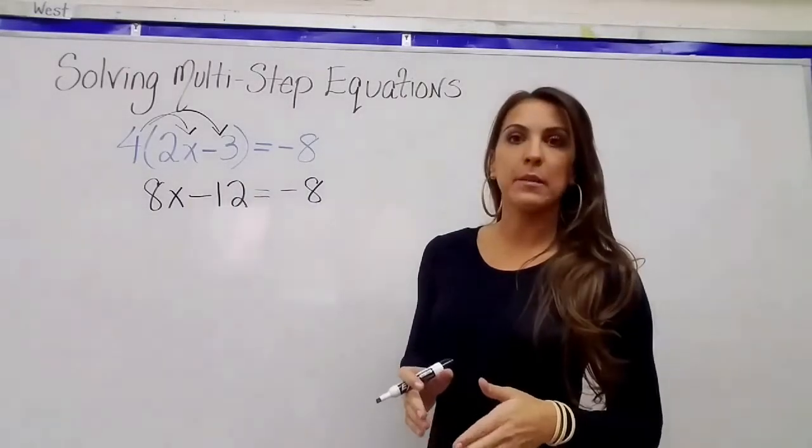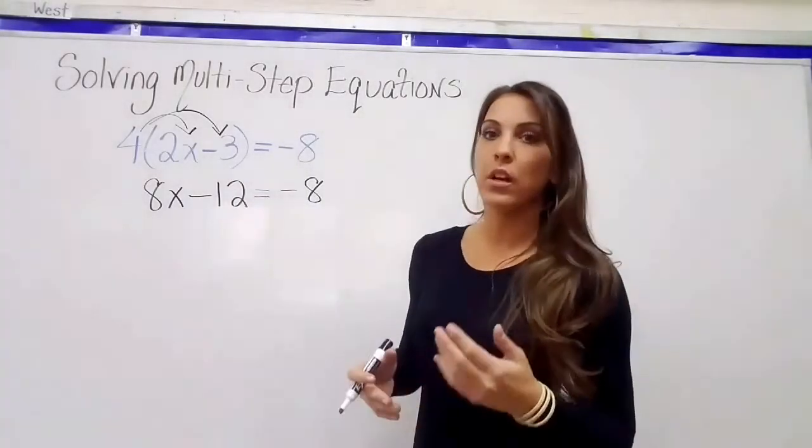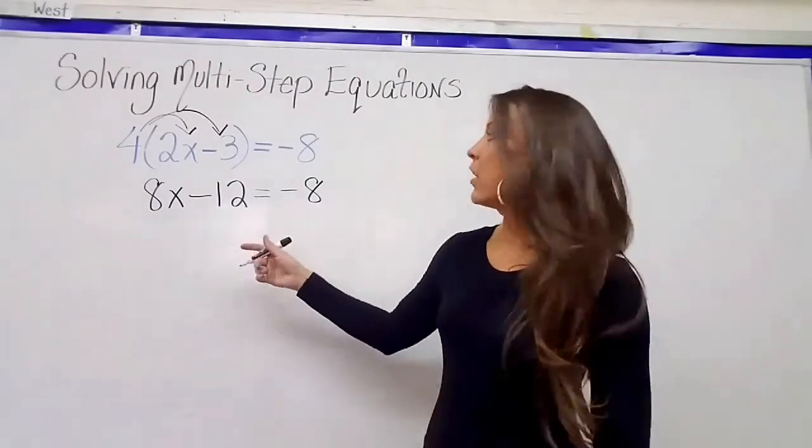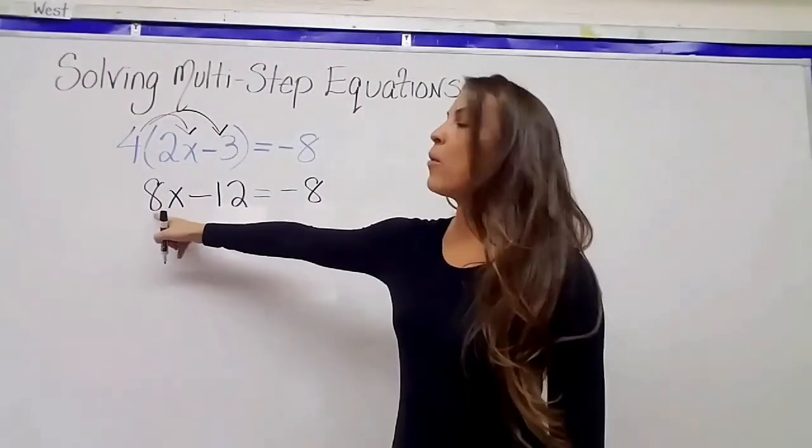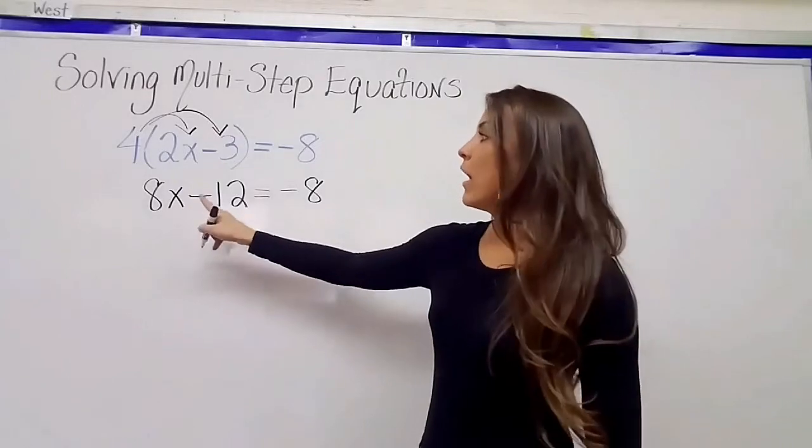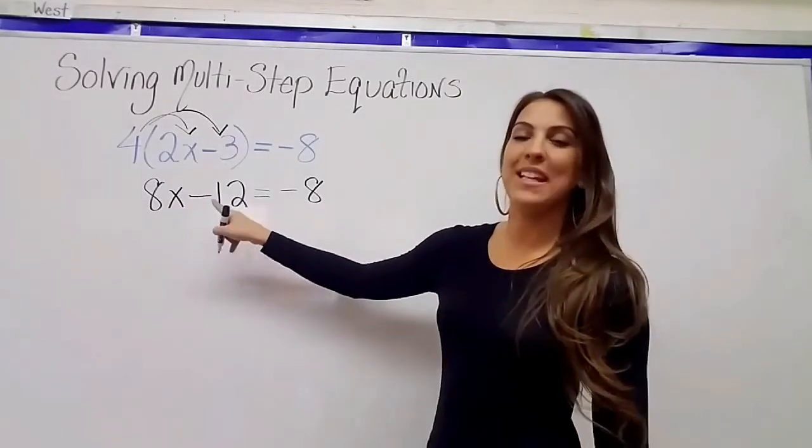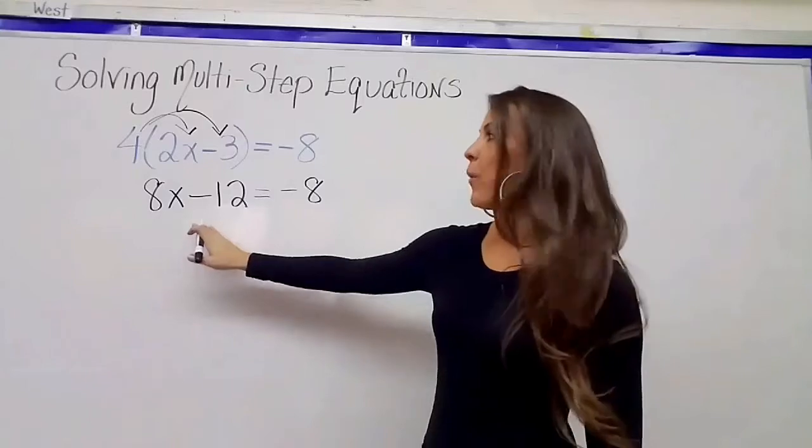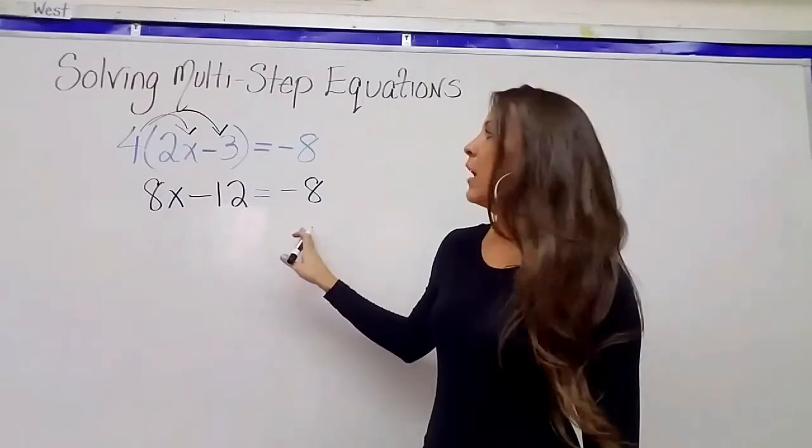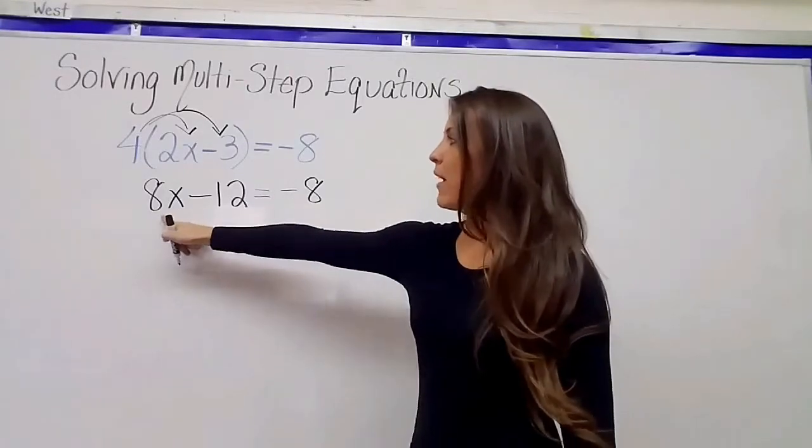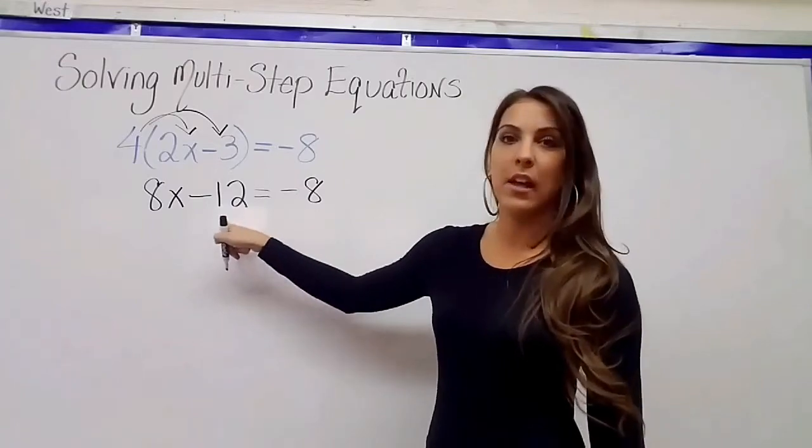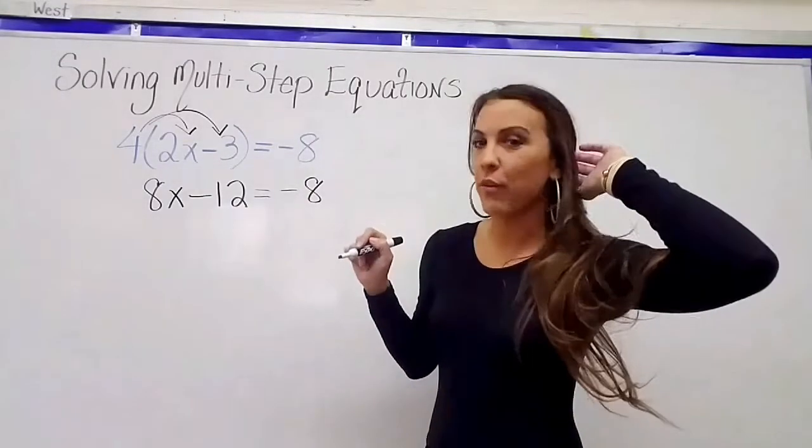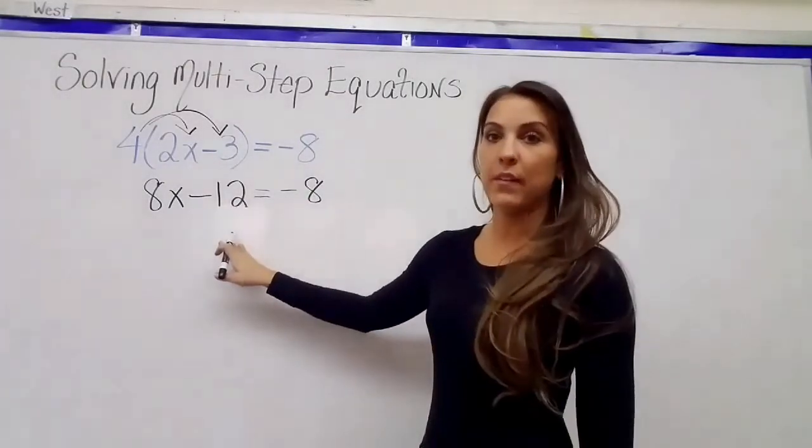So we're going to solve for x by using inverse operations. We're going to do the opposite of what we see here. So I see that x is being multiplied by 8, and it's also got subtraction of 12. It's easier to get rid of the subtraction first, although I could divide everything by 8. But if you jump ahead, you see that if I divide by 8, I'm going to end up with a fraction here, and I know that a lot of you out there don't love fractions. So if we get rid of the negative 12 first,